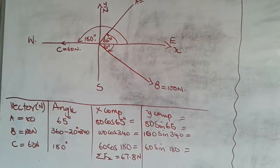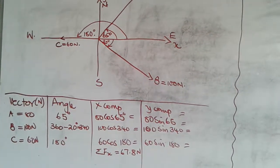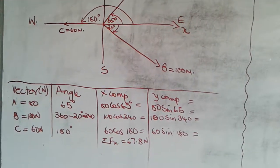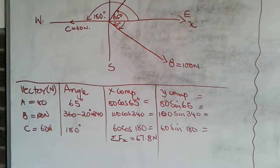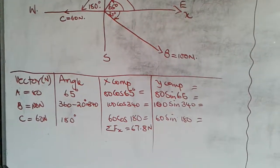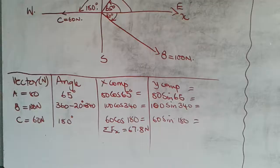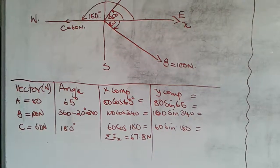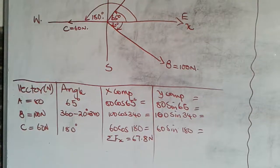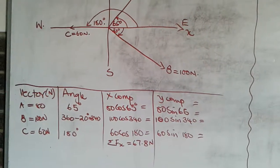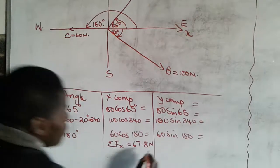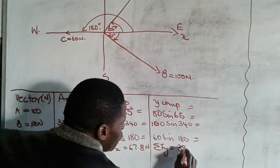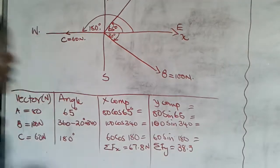Now for the y-components: 80 sin 65° = 72.5 N, 100 sin 340° = −34.2 N, and 60 sin 180° = 0 N. Adding these together, the summation of forces in the y-direction equals 38.3 newtons.